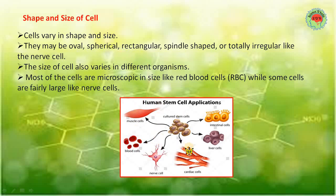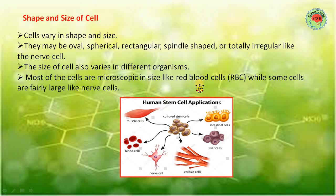You can see different types of cells here. Muscle cells are in an elongated form. Blood cells are small in a bun shape. The nerve cell is the longest cell - the largest and longest cell we have. Cardiac cells found in our heart are in a strand form. Liver cells are small and circular, and intestinal cells appear in an oval shape with villi. Most cells are microscopic like red blood cells (RBC) which we cannot see with the naked eye, while some cells like the nerve cell are fairly large and can be seen with our eyes.